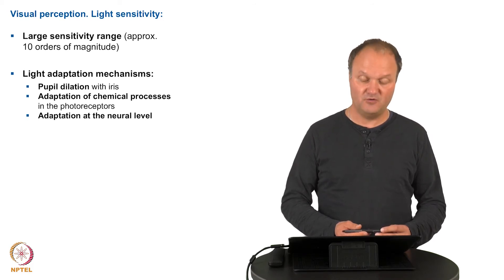And then there is a third process, which is an adaptation at the neural level by increasing or decreasing the amount of neuron transmission. This one is less effective, but it's much faster than the chemical process.